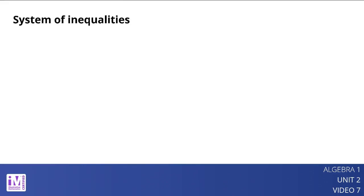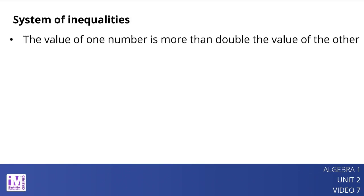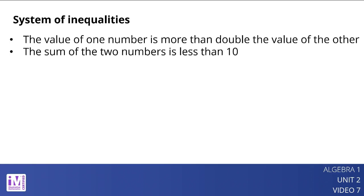Here is an example. Suppose there are two numbers, x and y, and there are two things we know about them: the value of one number is more than double the value of the other, and the sum of the two numbers is less than 10. We can represent these constraints with a system of inequalities: y is greater than 2x and x plus y is less than 10.